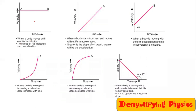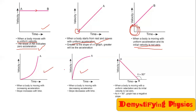A quick recap — these are velocity-time graphs; we can use velocity in place of speed everywhere. Uniform velocity gives a straight line parallel to the time axis with zero acceleration. A straight line with positive slope means uniform acceleration — if it starts from the origin, initial velocity is zero; if it starts above the origin, initial velocity is not zero. A curved line means non-uniform acceleration; if slope increases it is positive acceleration, if slope decreases it is retardation or negative acceleration. A downward straight line means uniform retardation.